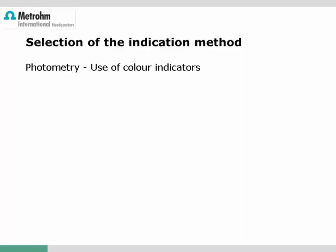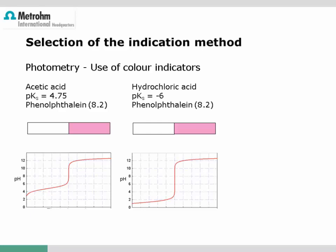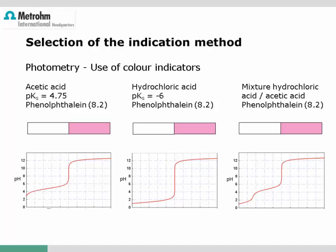More than 200 years ago, titration was invented using color indicators — titrant was added until a significant color change was observed. Still very popular is phenolphthalein as a color indicator for acid-base titrations, which changes color exactly at pH 8.2. For the titration of acetic acid, as long as the pH is below 8.2 the solution is colorless, then a sudden pH jump caused by sodium hydroxide addition turns the solution violet. The same applies for hydrochloric acid, where the center of the pH jump is pH 7, but the jump is so steep this makes no significant difference.